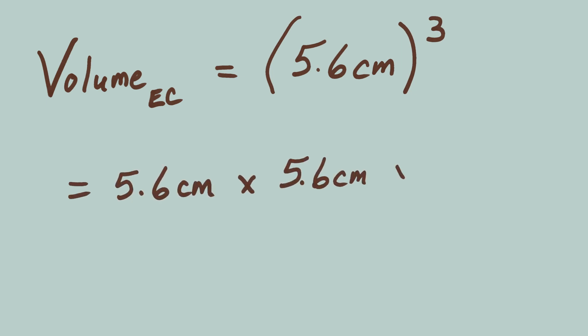So the volume of one of Ernie's cubes is the quantity 5.6 cm cubed, which equals 5.6 times 5.6 times 5.6, which equals 175.616 centimeters cubed. Don't forget the units.